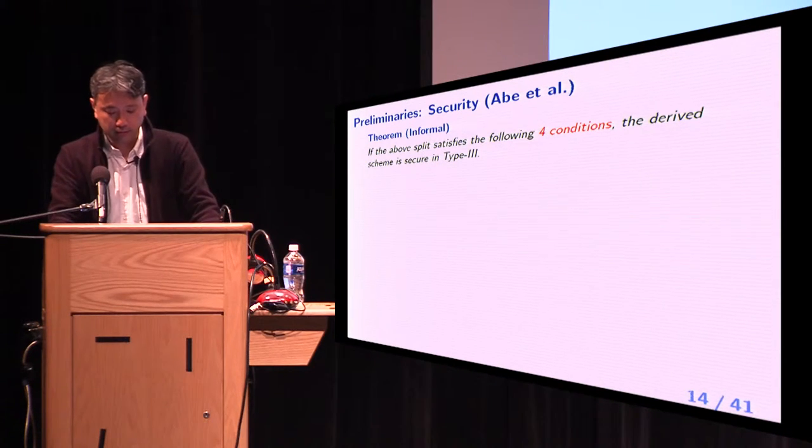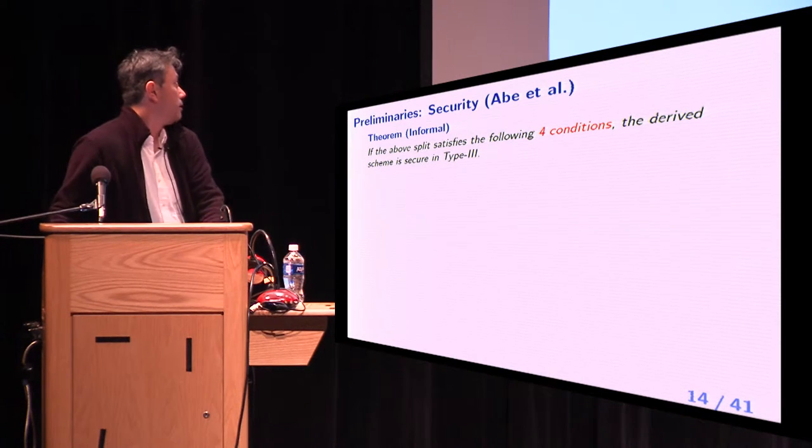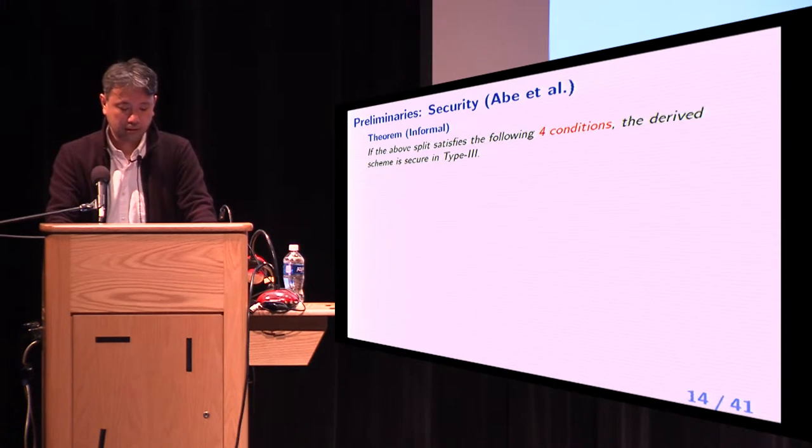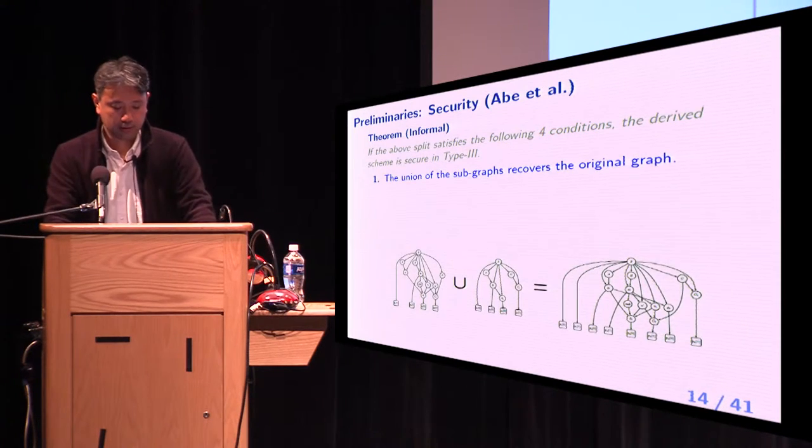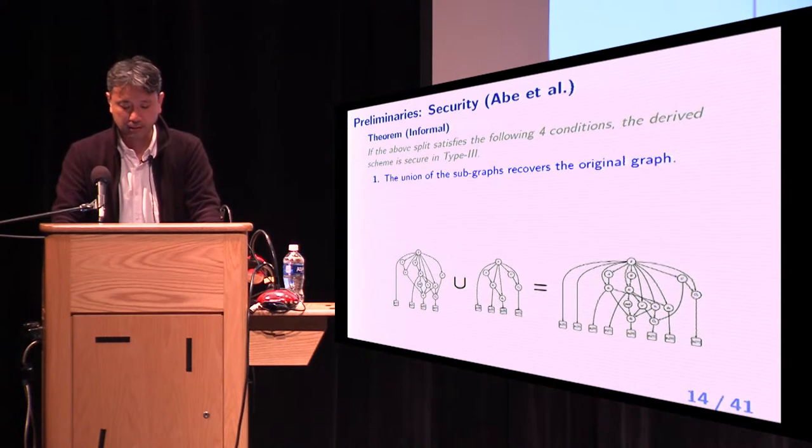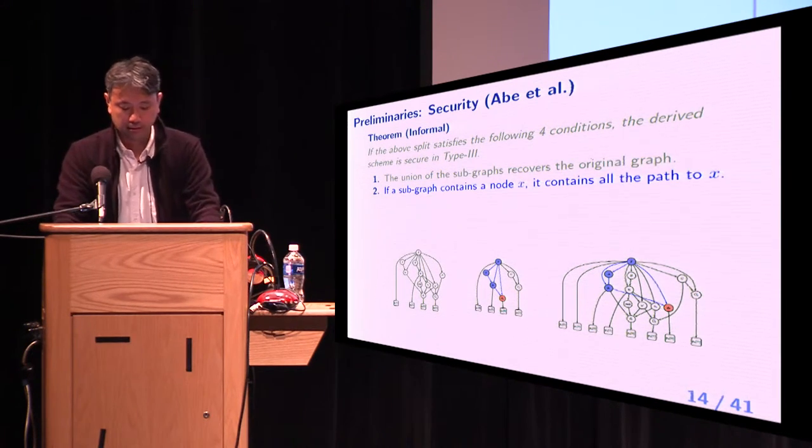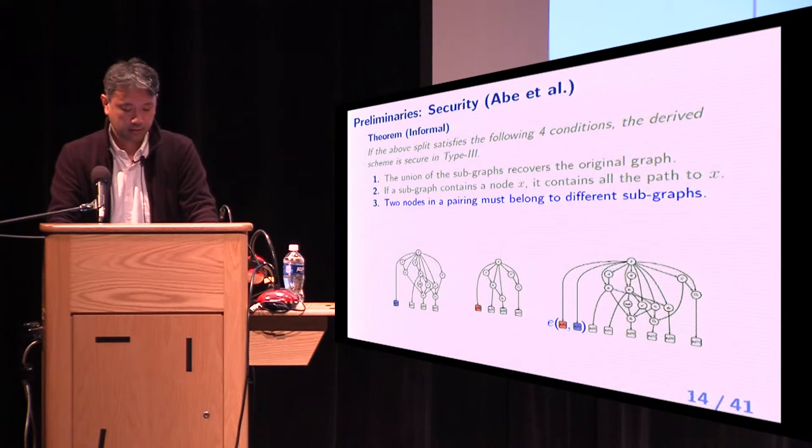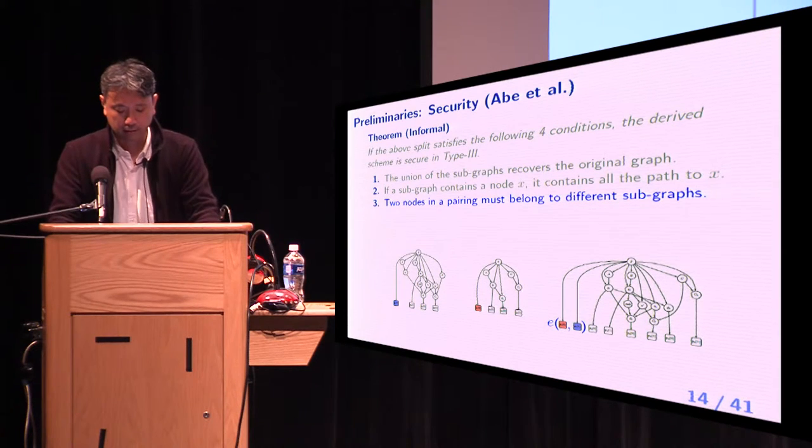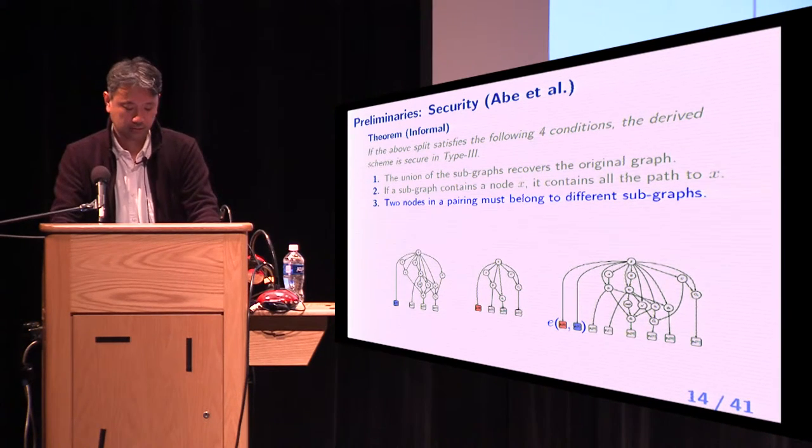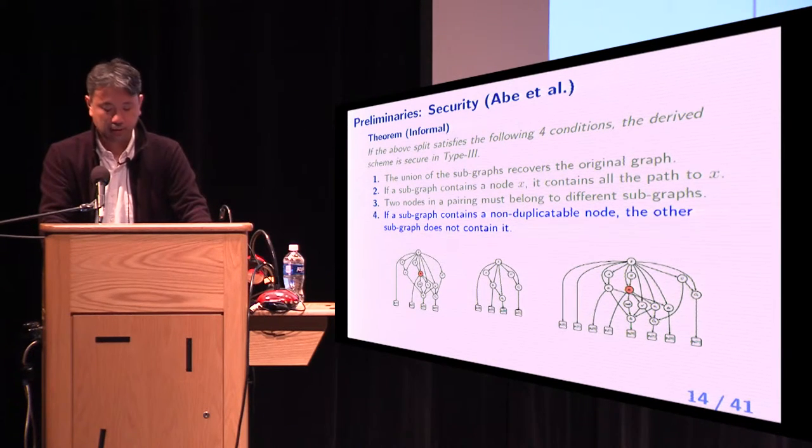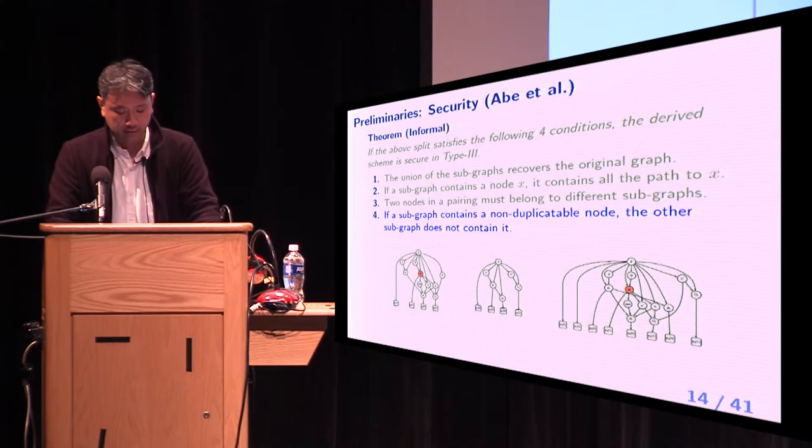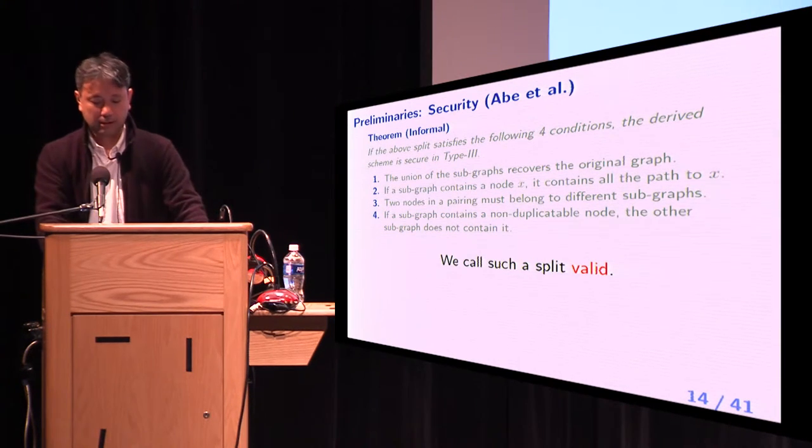And Abe et al. proved the following theorem. If above split satisfies the following four conditions, the derived scheme is secure in type 3. Condition 1, the union of the subgraphs recover the original graph. Condition 2, if a subgraph contains node X, it contains all the paths to X. Condition 3, two nodes in a pairing must belong to different subgraphs. Condition 4, if a subgraph contains a non-duplicatable node, which I will later explain, the other subgraph does not contain it. We call such a split valid.